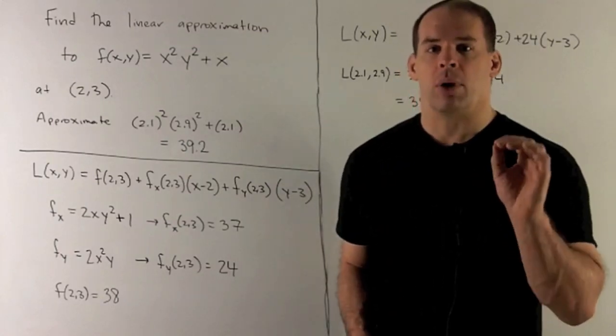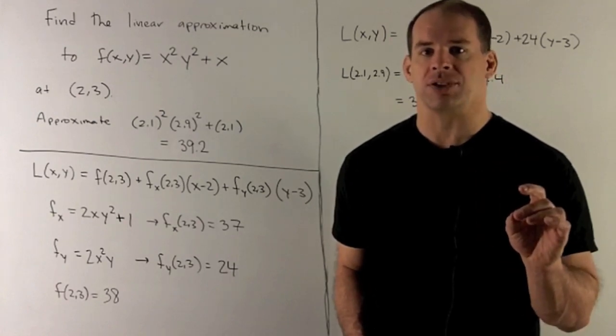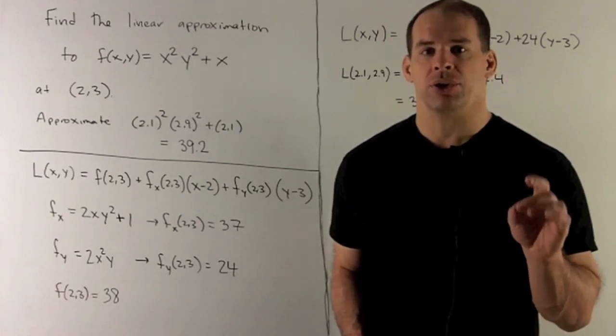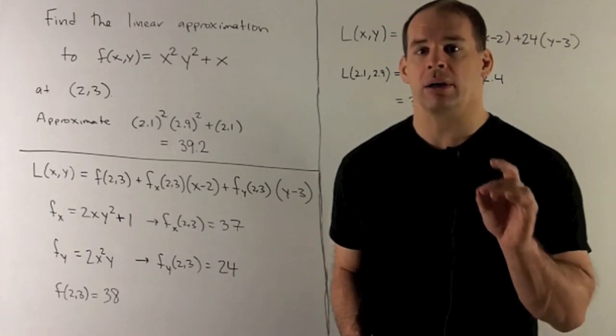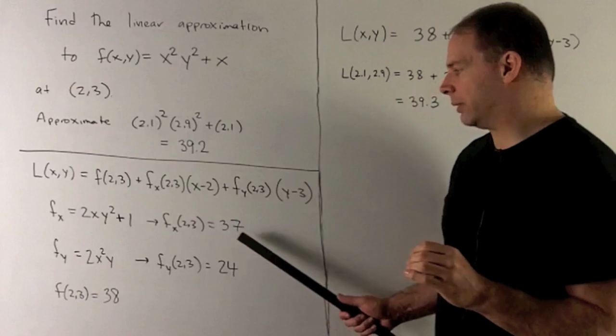Now, partial with respect to x. So here, we treat x as our variable, y as our constant. So I'll have 2xy² + 1. I put in (2, 3), what comes out is going to be 37.